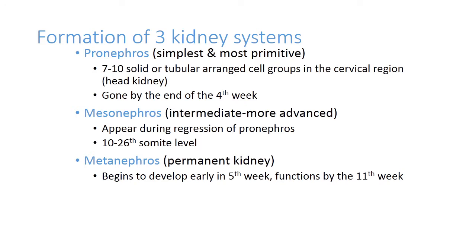The formation of the kidney passes through three stages: pronephros — the head kidney; mesonephros — the intermediate, more advanced kidney; and metanephros — the permanent kidney.